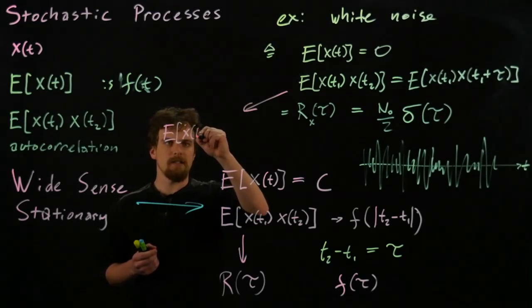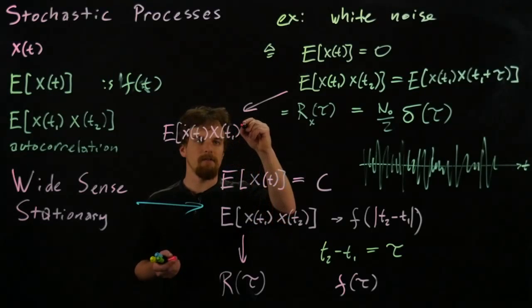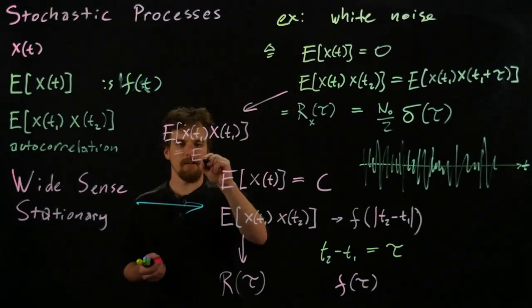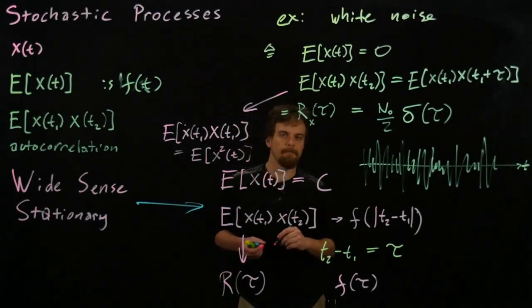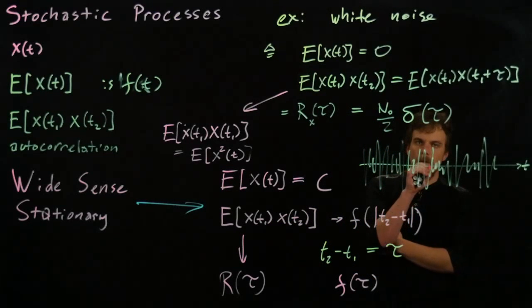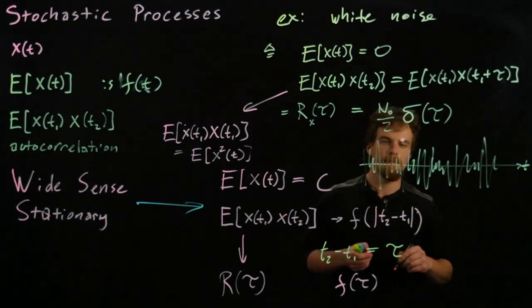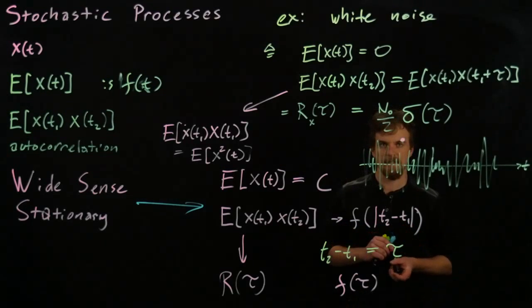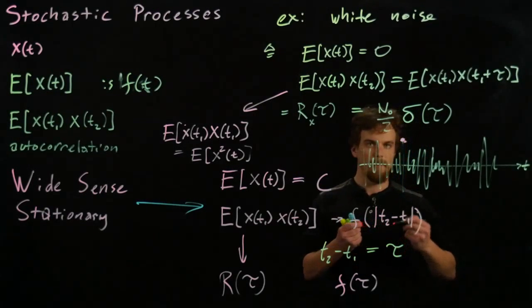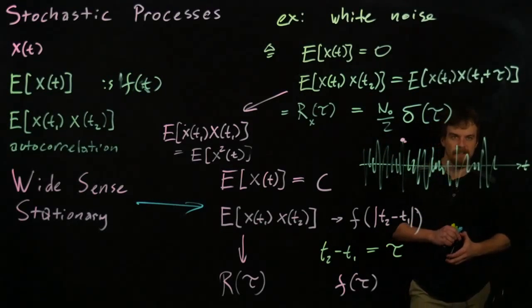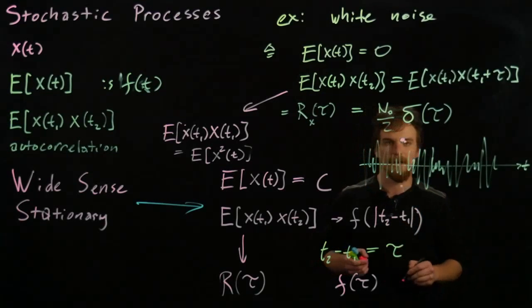When t₁ = t₂, the expected value of X(t₁)·X(t₂) becomes the expected value of X(t)² — the mean square value of the process. What this is really saying is: if we pick an instant in time and then look at the very next instant, the process is not correlated with itself at those two different instants. We can't say anything for certain about the product of those two values. This indicates it's the most random thing we could possibly encounter — it could go from a maximum value straight to a minimum value in the next instant.